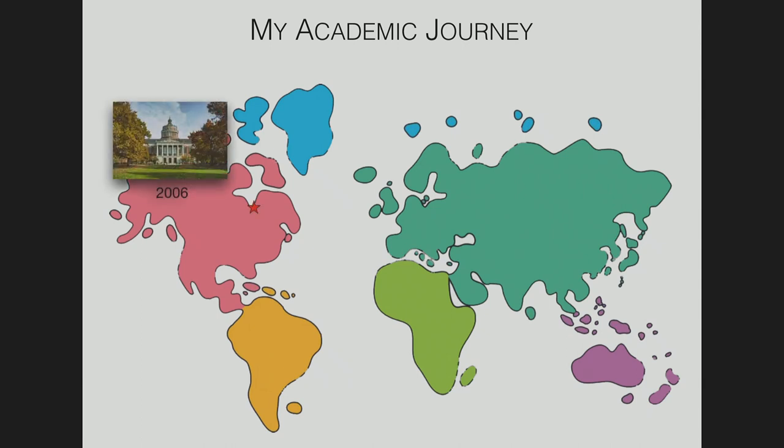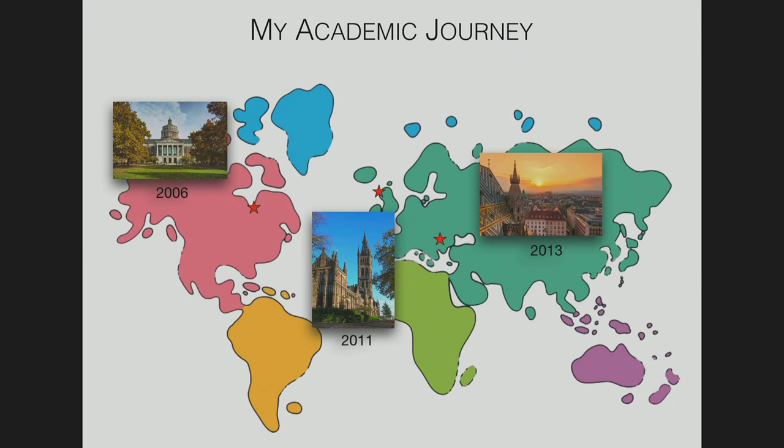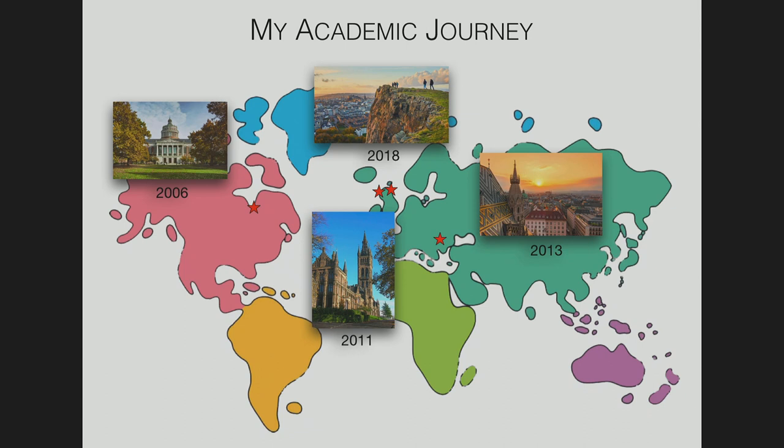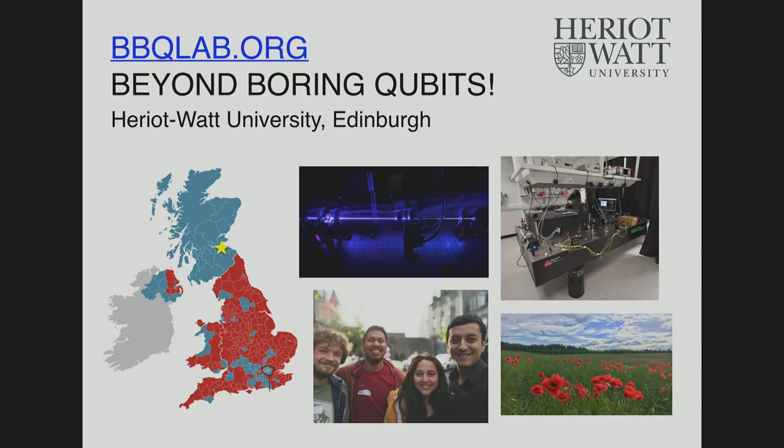My journey has been pretty international so far. I was born in India. I started my PhD in Rochester in the U.S. in 2006. I had a brief stint in Glasgow in 2011 when I visited a research group. I did a couple of postdocs in Vienna starting in 2013. And as of last year, I started my own group in 2018 in Edinburgh. I don't know why it's called Edinburgh.